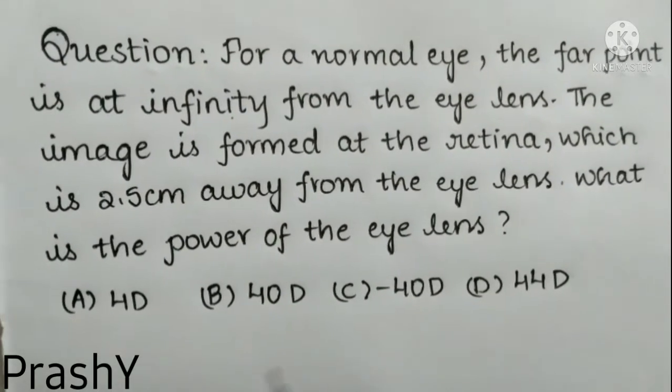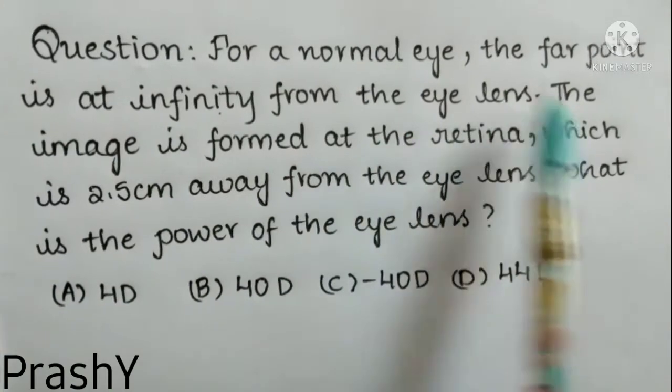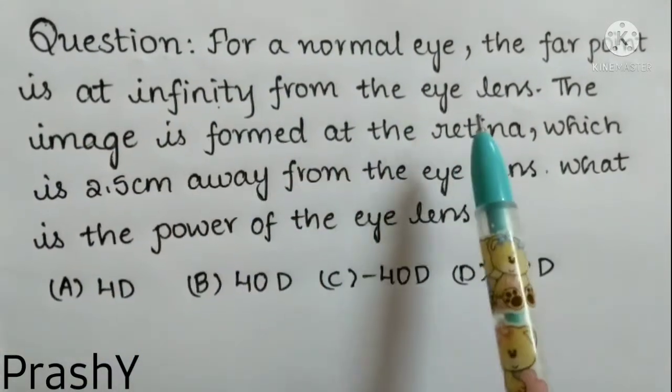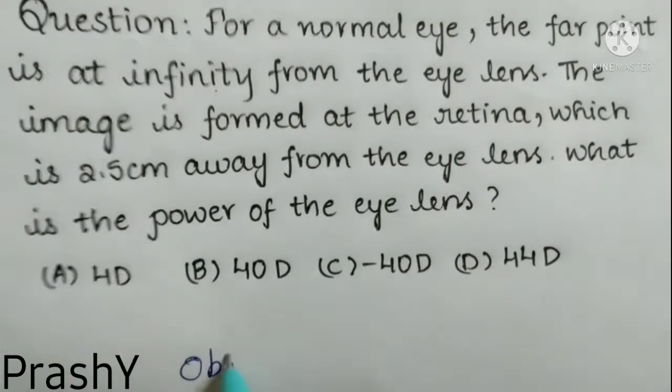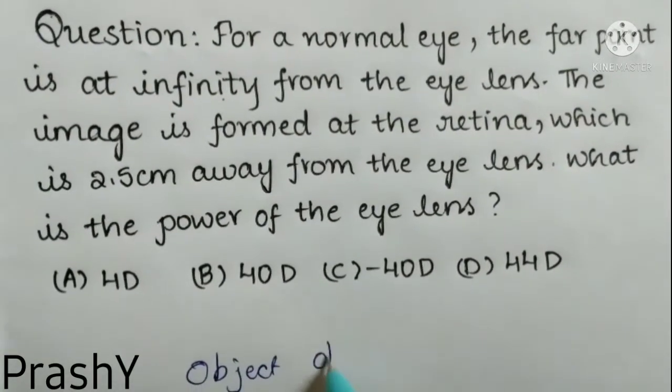Let's move to the solution. Here given far point is at infinity from the eye lens, so this far point is nothing but the object distance. So object distance u is given as, we have to take it as negative, so minus infinity.